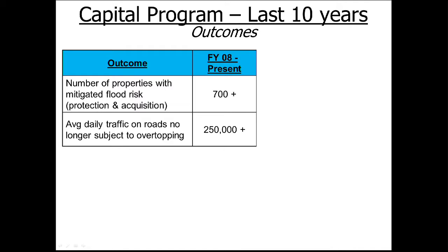In terms of outcomes, the program to date has significantly mitigated flood risk for over 700 properties — either by projects that increase drainage capacity so they're no longer at risk, or in some cases by acquiring the property so the owner can relocate somewhere not flood-prone. On roadways where we've corrected hazardous road overtopping situations, the average daily traffic protected is over a quarter million vehicles every single day, who now have a significantly higher level of protection than before the projects.